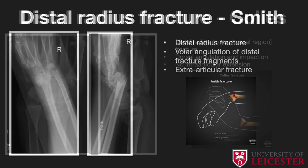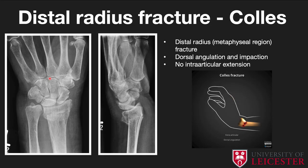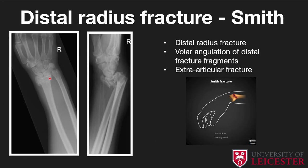Other eponymous distal radius fractures include Barton's and reverse Barton's fractures, which relate to the type of fracture pattern at the distal radius, but these are beyond the scope of this lecture.